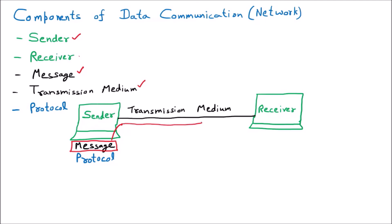The transmission medium can be wired or wireless. If it is wired, it will be a physical path where the message travels — it can be a twisted pair cable, coaxial cable, or fiber optic cable. If I am talking about a wireless connection, it can be radio waves or microwaves.